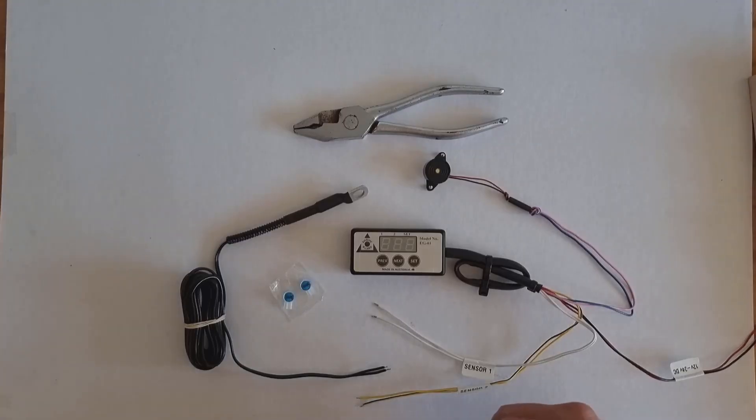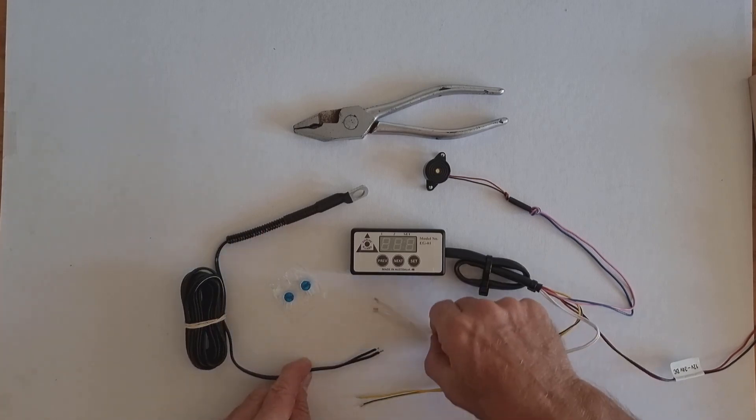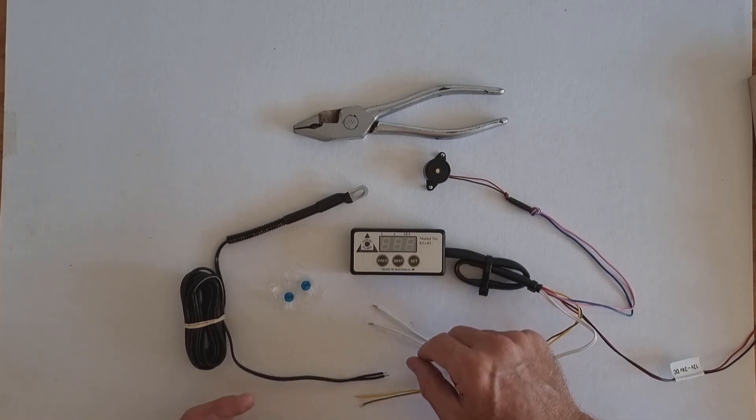In this video I'm going to show you how to use the connectors that are supplied in the kit to connect the temperature sensor to sensor 1 inputs. Equally you can solder and heat shrink, but this is how you use the connectors.